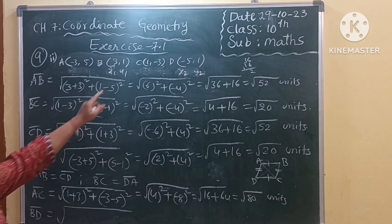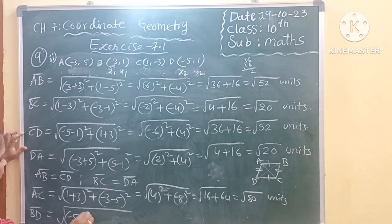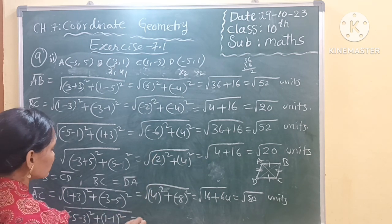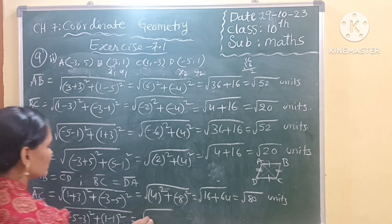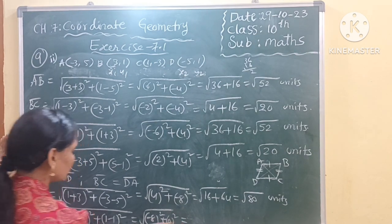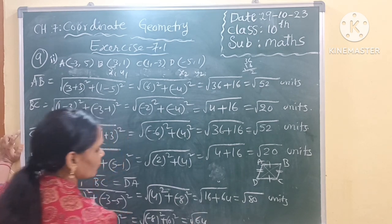Now see here, X2 minus X1 whole square, Y2 minus Y1 whole square. So here minus 5 minus 3, minus 8 whole square, 0 square. So minus 1 plus 1 will become 0. 64 units.